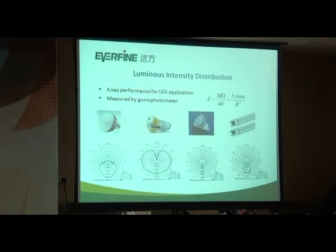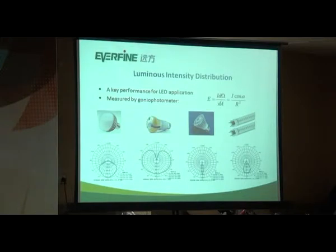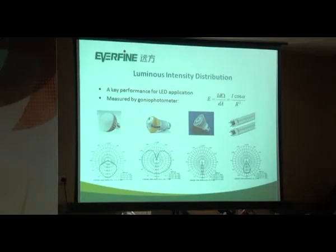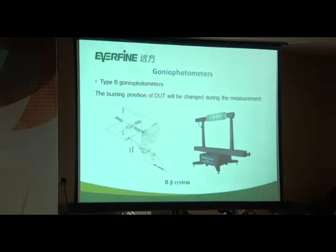Next, let's talk about another important quantity: luminous intensity. Luminous intensity distribution is very important in lighting design. The value of luminous intensity can be calculated according to the inverse square law from illuminance. As to measurement instrument, we could use a gonio photometer. According to CIE standard 121, there are three kinds of gonio photometer: Type A, Type B, and Type C. Usually the latter two are more commonly seen.